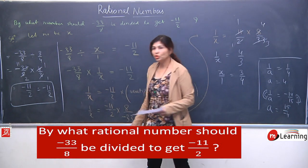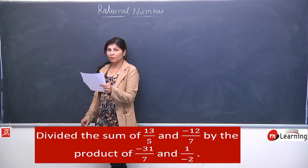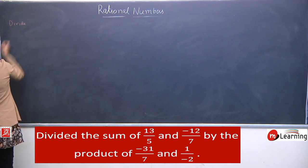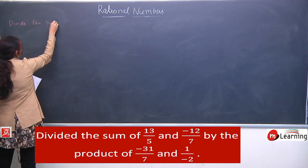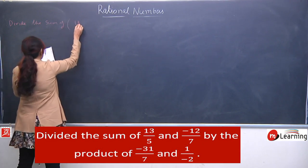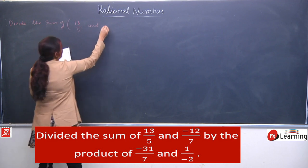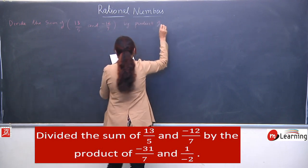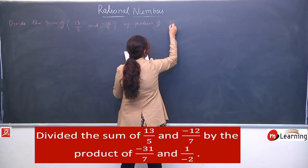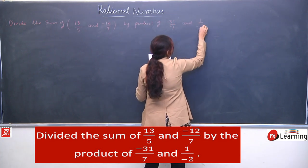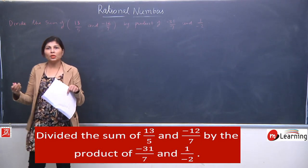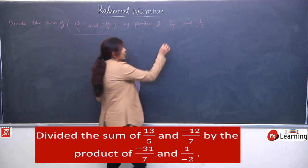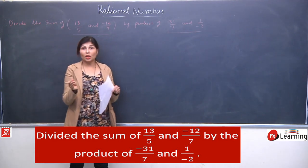So yeh tha division pe based question. Moving to another question which is quite different from the previous one: divide the sum of 13 by 5 and minus 12 by 7 by the product of — and then by product of those terms. There are 4 terms, divided into 2 parts. First, you need to find the sum of these, and another part — the product of these. Jab inke answers aa jaenge, then you have to divide. Hum isko partly solve karenge.